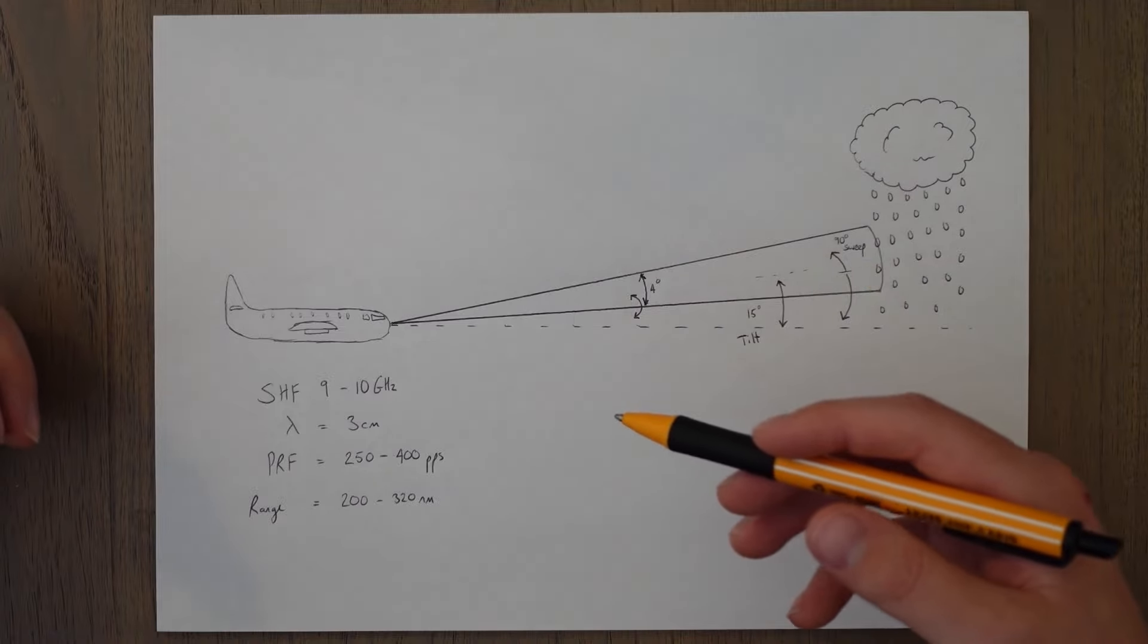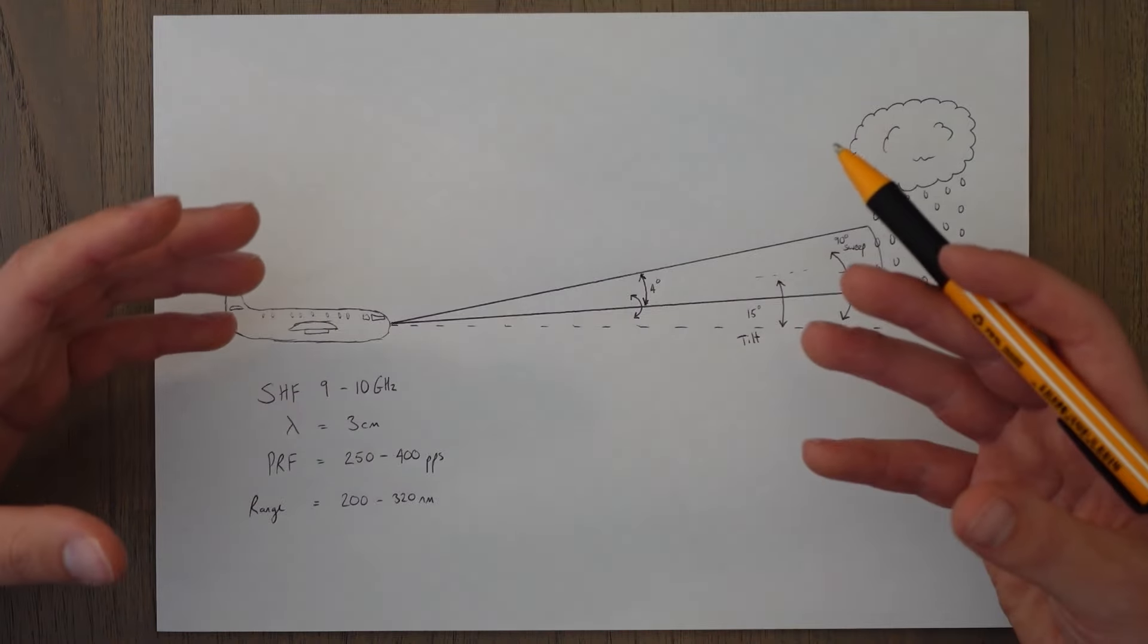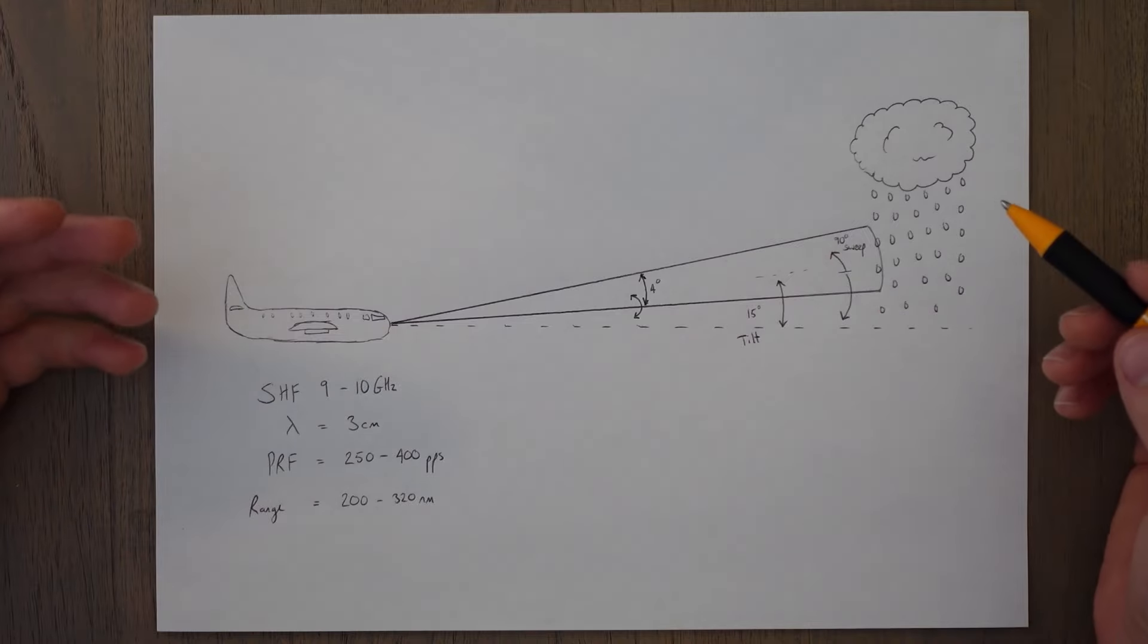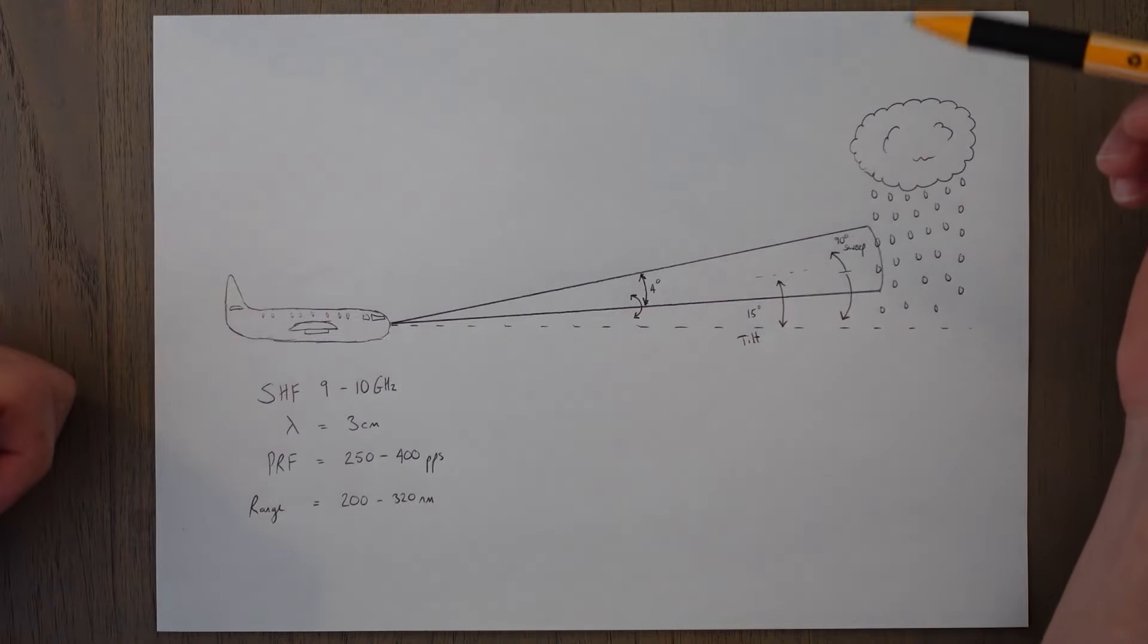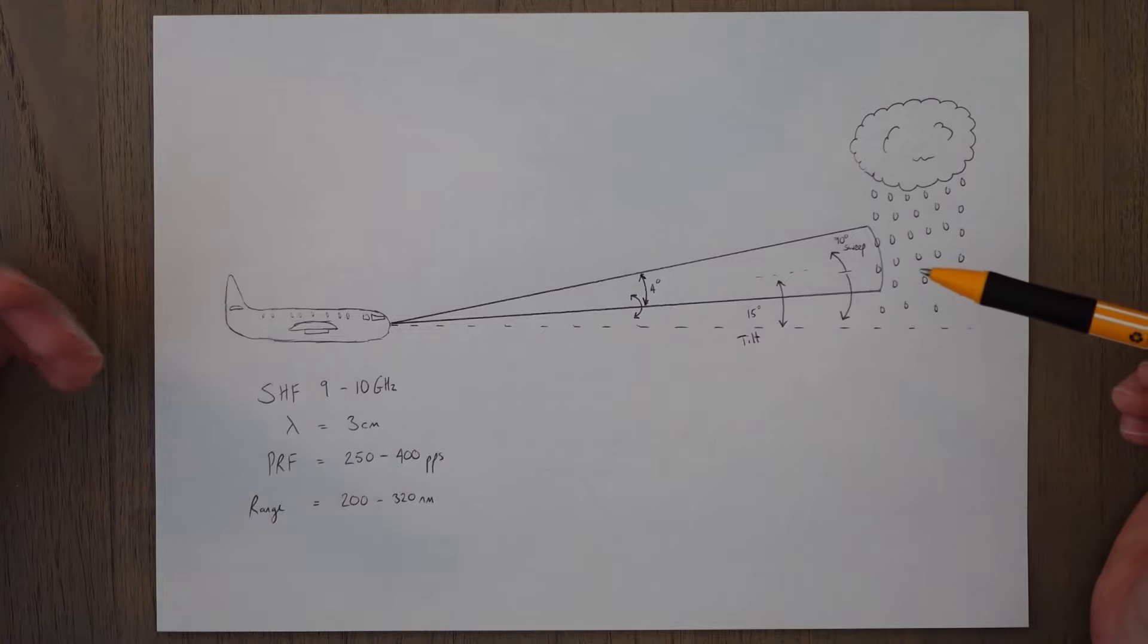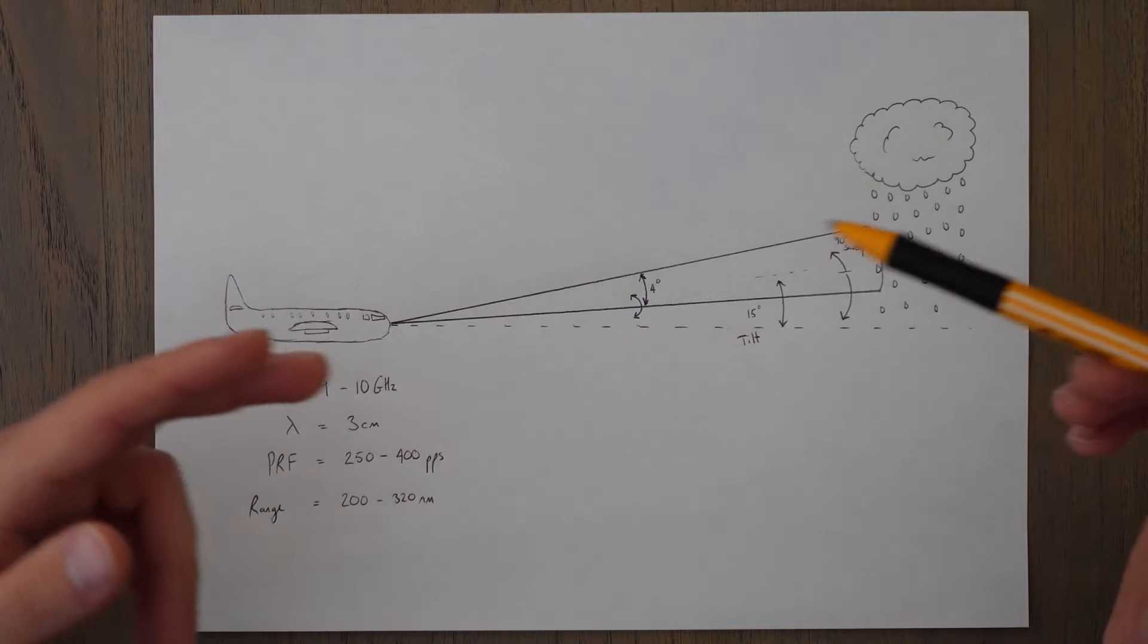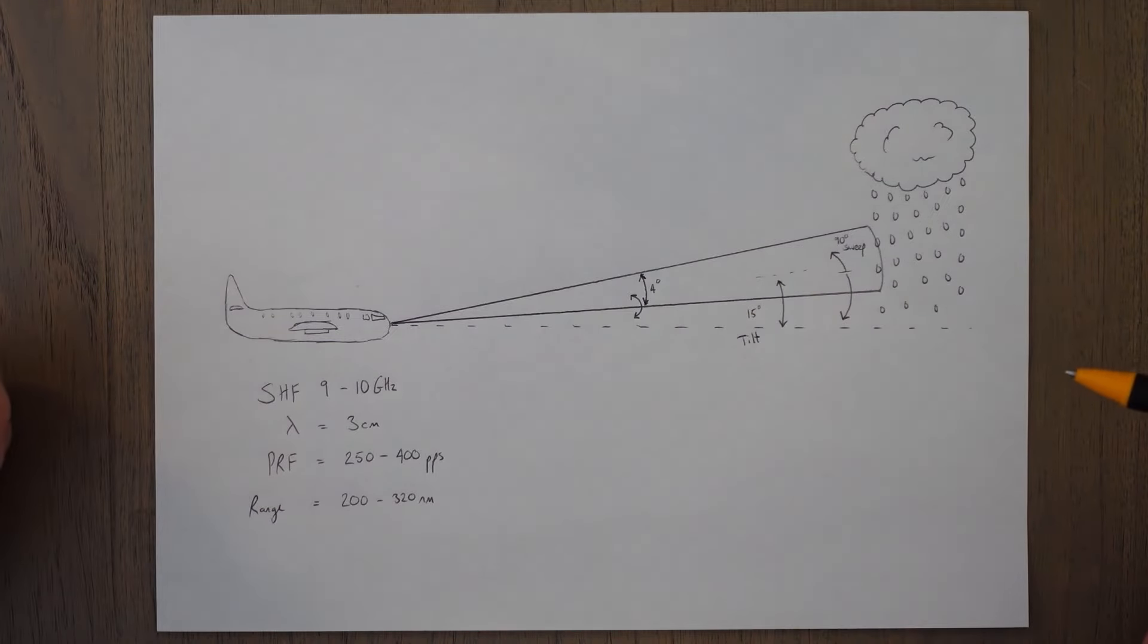In order to detect the precipitation we want to use some of the principles that we learned about in the previous class. Hopefully you remember that we want to have a wavelength that is similar in size or smaller than the object. We want a frequency that has line of sight propagation and we want the pulses spaced nicely so we get the returns within a suitable time frame before the next pulse is sent out.